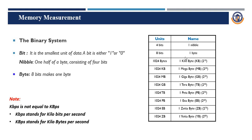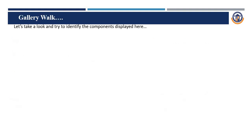4 bits equal 1 nibble. 8 bits equal 1 byte. 1024 bytes equal 1 kilobyte. 1024 kilobytes equal 1 megabyte. 1024 megabytes equal 1 gigabyte. 1024 gigabytes equal 1 terabyte. Nowadays, 1 terabyte is commonly used to store data. On the company and management side, petabytes and exabytes are also used, but for general use, 1 terabyte is sufficient.